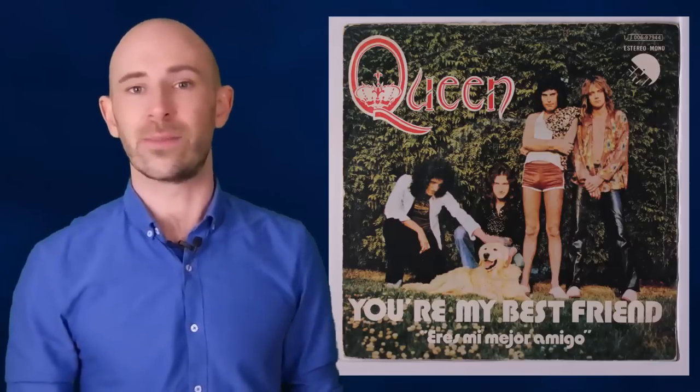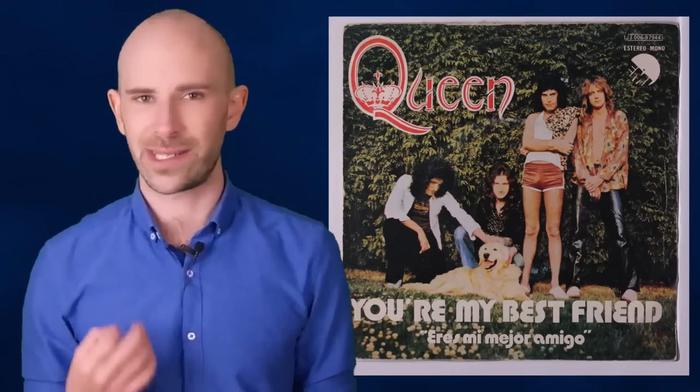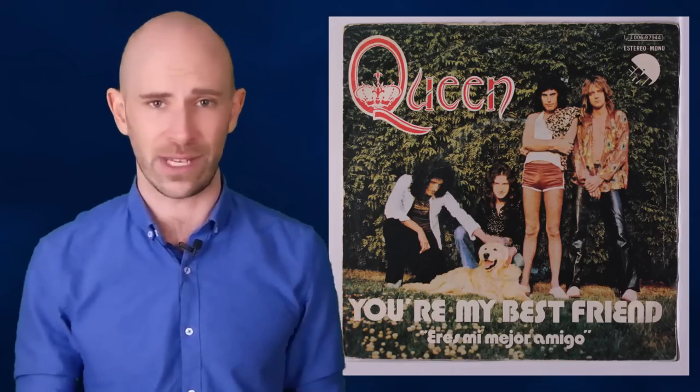As it turns out, EMI had banked on You're My Best Friend being the big hit of the album, and they pushed the band to make it the first single. Queen remained steadfast in their decision and told EMI that the first single had to be Bohemian Rhapsody.